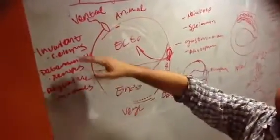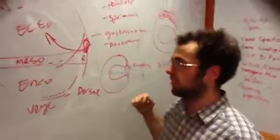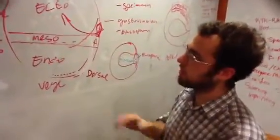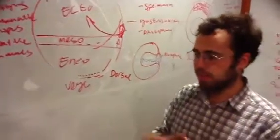The one final type of development is invariant. Invariant development is characteristic of C. elegans.